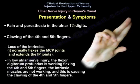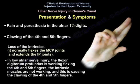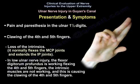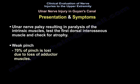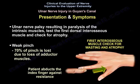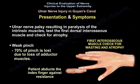The patient with ulnar nerve injury in Guyon's canal may present with pain and paresthesia in the ulnar one and a half digits, clawing of the fourth and fifth fingers, and loss of intrinsic function — which normally flexes the MCP joints and extends the IP joints. In low ulnar nerve injury, the flexor digitorum profundus continues to flex the fourth and fifth fingers while the intrinsics are not working, causing the clawing. There may also be atrophy of the first dorsal interosseous, weak abduction of the index finger, and 70% of pinch strength is lost due to adductor muscle weakness.